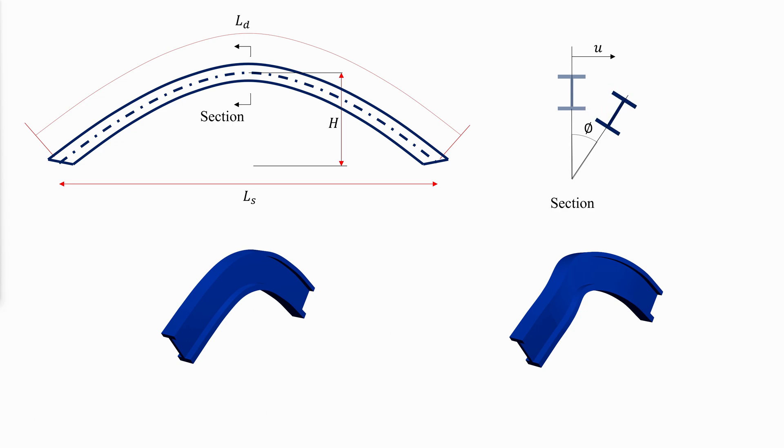Under axial compression, the arc can potentially buckle out of plane, where the buckled shape is characterized by out-of-plane translation and twisting.